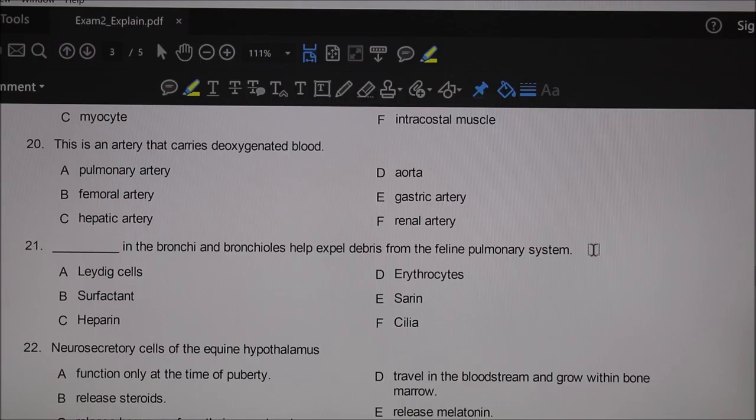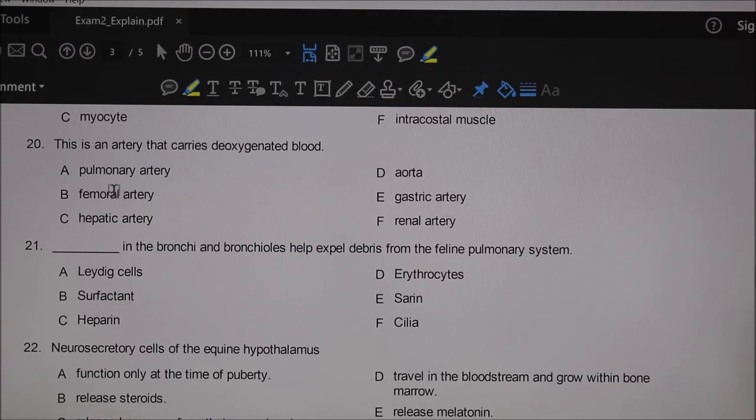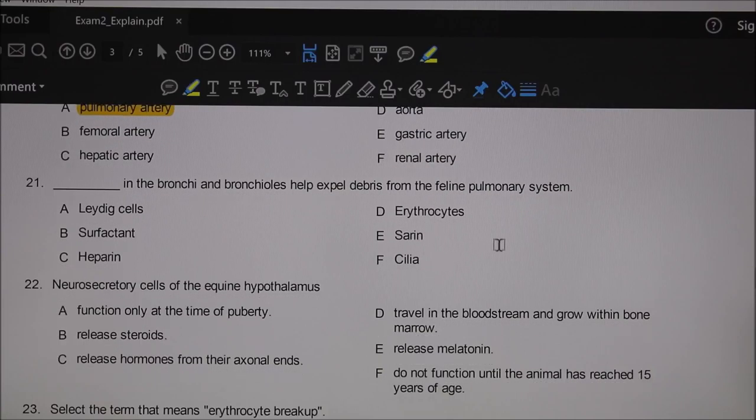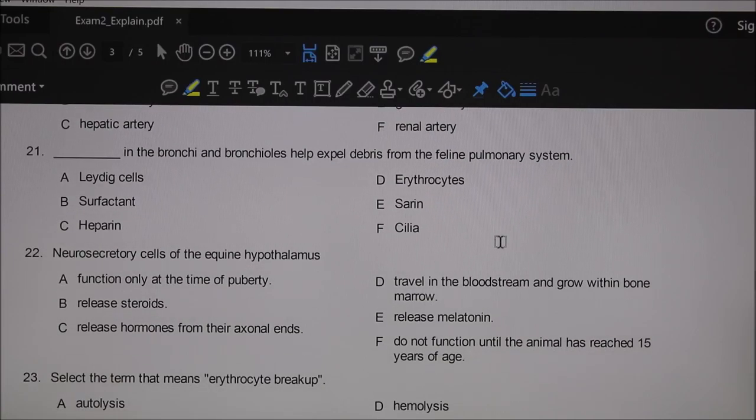Twenty: this is an artery that carries deoxygenated blood. Most arteries carry oxygenated blood, so we're looking for something weird. When blood leaves the right heart, it goes into the pulmonary artery, and that's definitely very deoxygenated—it's coming back from the body.